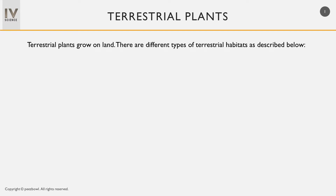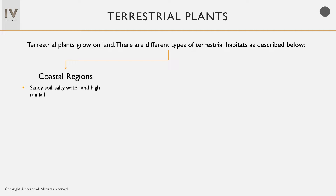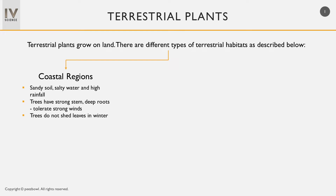The first terrestrial habitat is coastal regions. Trees in this habitat are well adapted to grow in sandy soil, salty water, and high rainfall. They have very strong stems and long, deep roots which can tolerate strong winds. Also, plants in coastal regions do not shed their leaves in the winter season. Few examples of coastal region plants are coconut and palm trees.